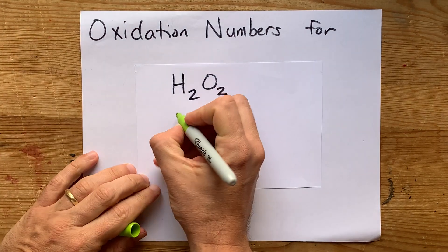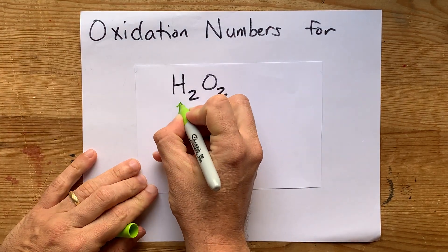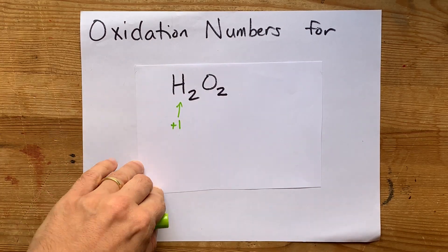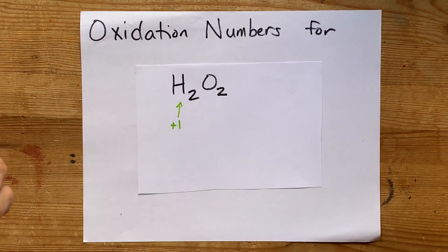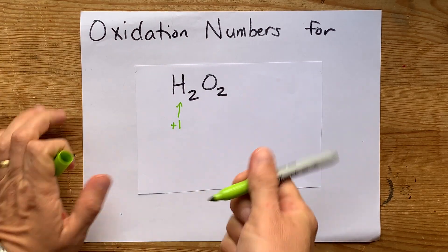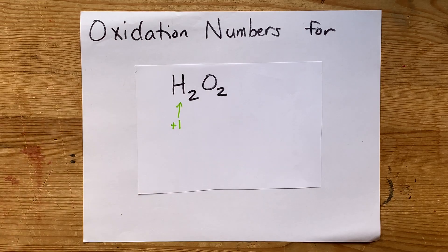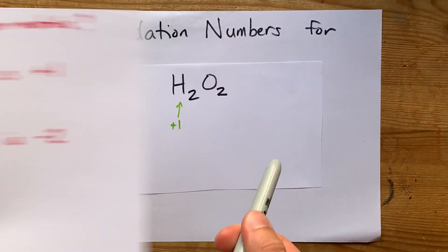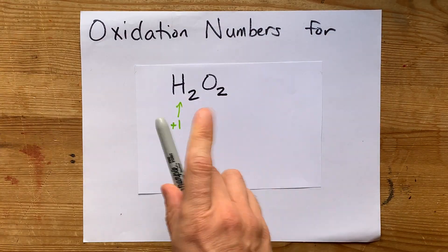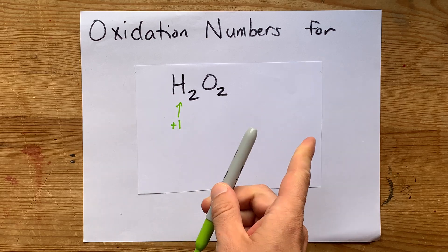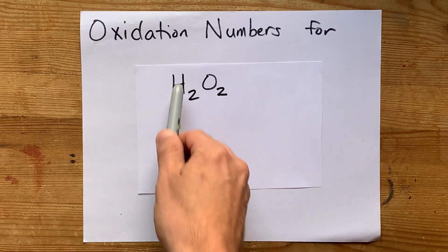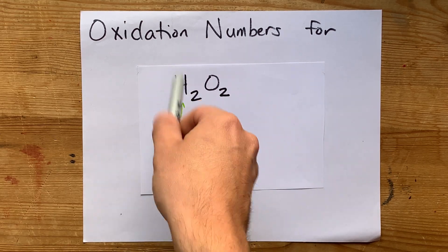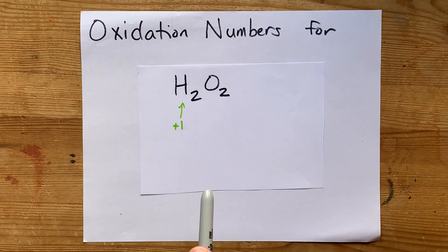What we have here are two hydrogens, each with an oxidation number of plus one. The next highest priority rule is that oxygen is minus two, but that's not possible here because the hydrogen rule is a higher priority.